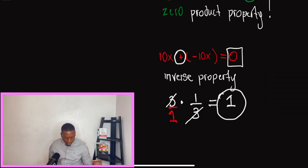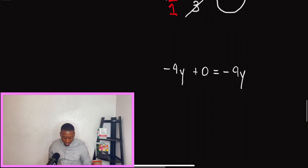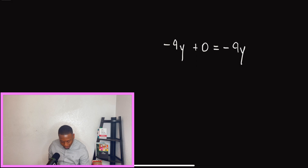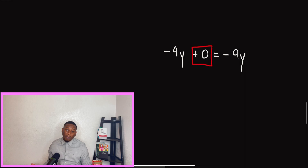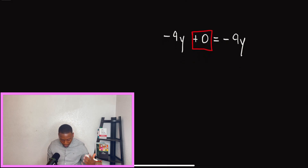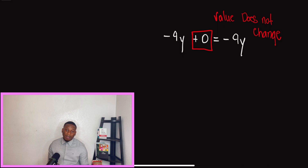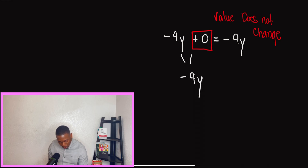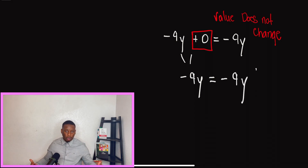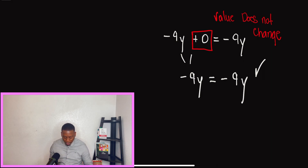My very last property today is the identity property. Everyone gets a little confused when they see a zero here and thinks it's the inverse property — but it is not. With the identity property, the value does not change. So when we look at negative nine Y and we add zero to it, we get negative nine Y equals negative nine Y. Did anything change? Absolutely not. This is a perfect example of the identity property of addition.